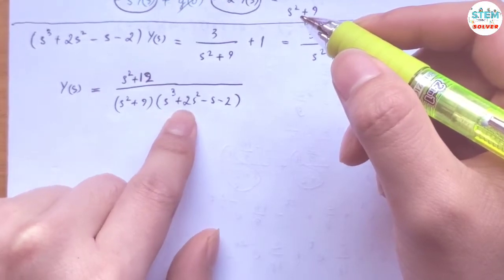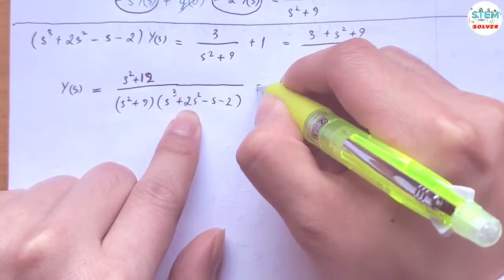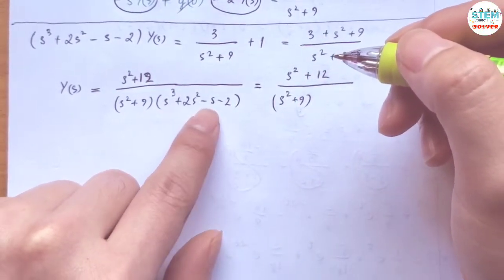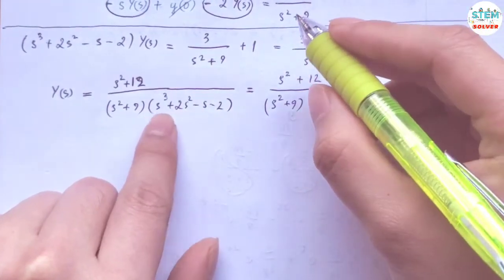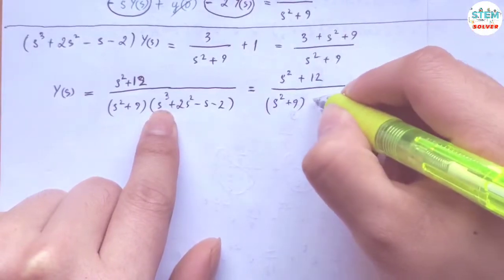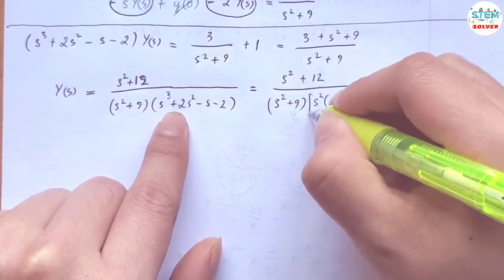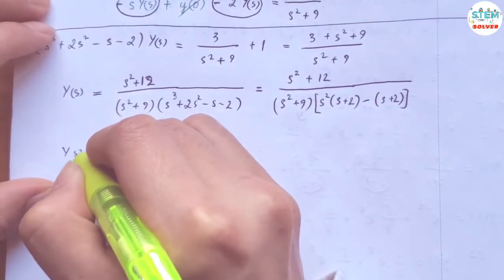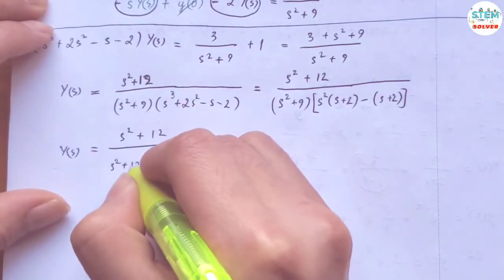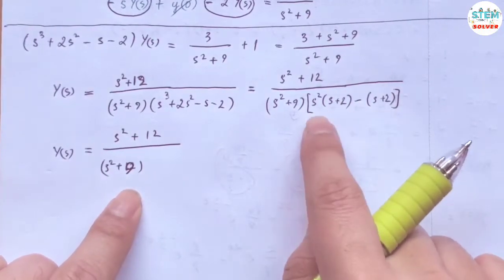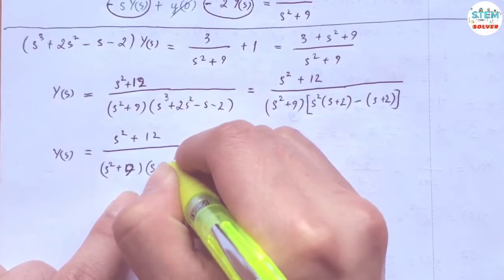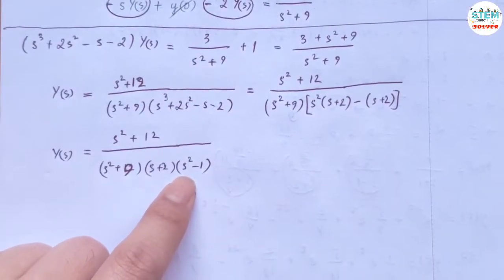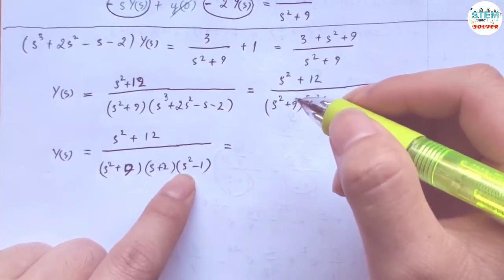Now I write the denominator in factored form. For s cubed plus 2s squared minus s minus 2, I factor by grouping: factor s squared from the first two terms, leaving (s plus 2); factor out negative 1 from the last two, also leaving (s plus 2). Both groups share (s plus 2), so we get (s plus 2)(s squared minus 1). Since s squared minus 1 is a difference of squares, it factors as (s plus 1)(s minus 1).